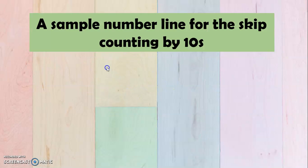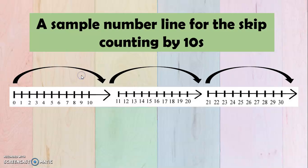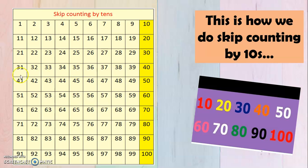Now this is a sample number line for skip counting by 10s. So we have here 10, and then we go to 20, and then 30, and the same goes with the other numbers. In the yellow boxes, we have here 10, 20, 30, 40, 50, 60, 70, 80, 90, and 100.